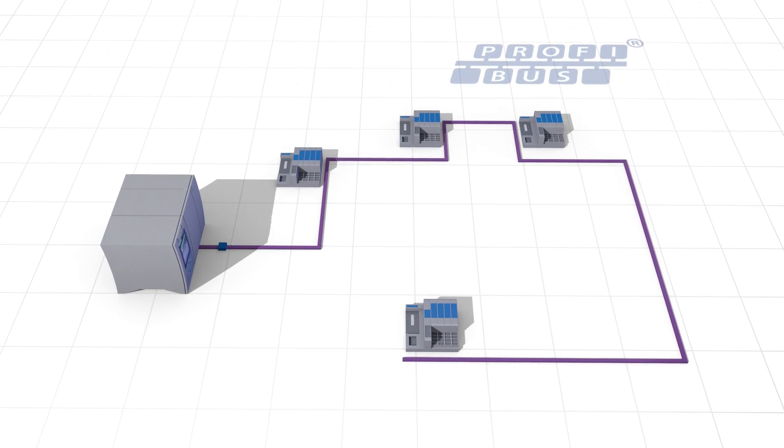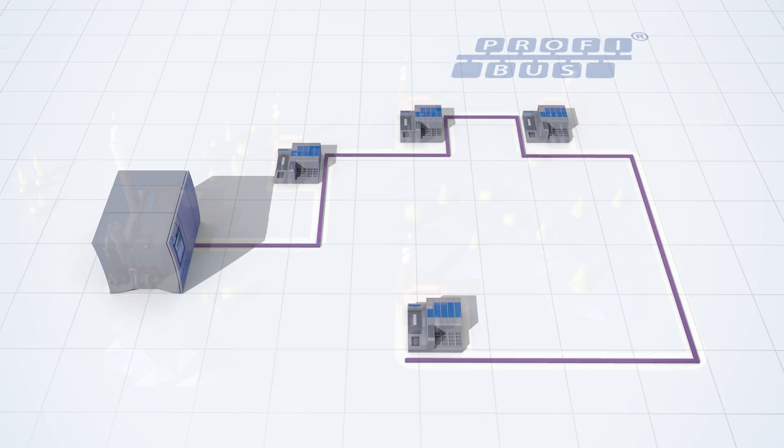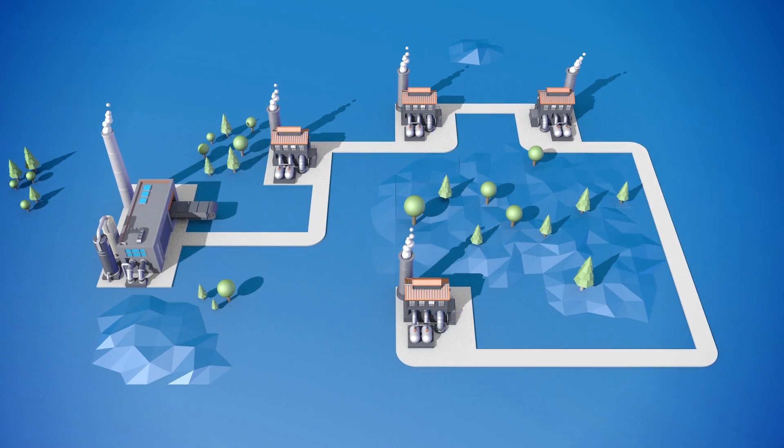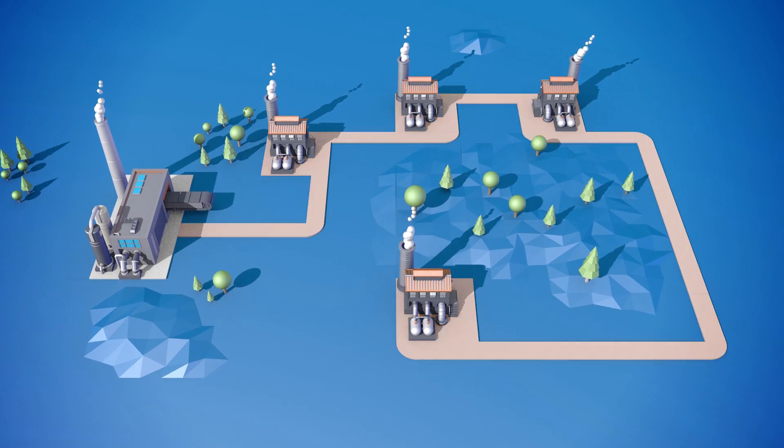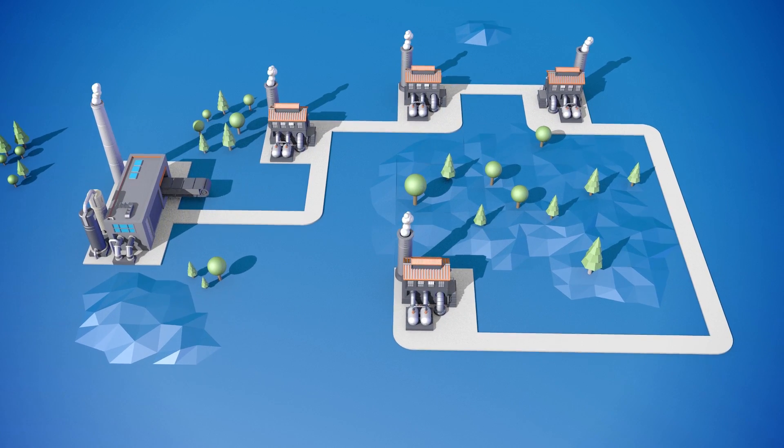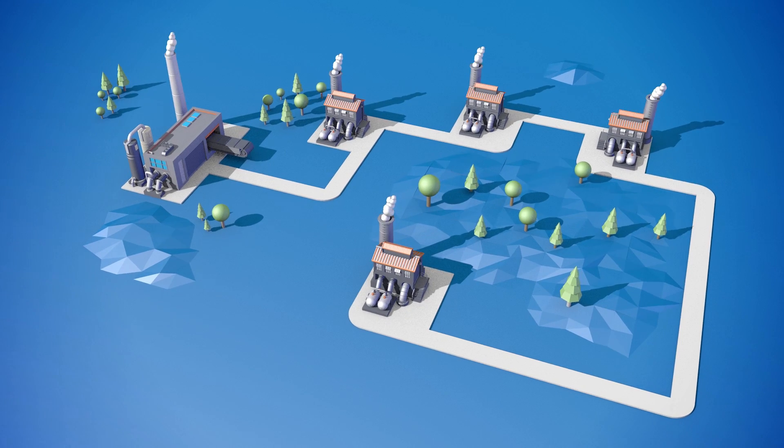In road traffic, the PROFIBUS technology would look like this. Imagine a street which only has a single lane for traffic. As a result, only one vehicle can go in one direction at any time.